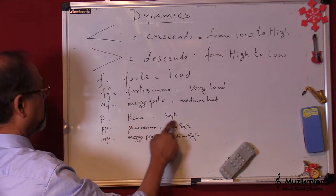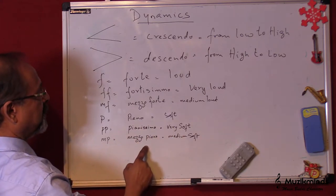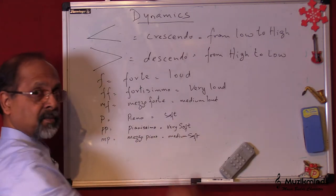P is piano, which is soft. PP is pianissimo, which is very soft. And MP is mezzo piano, which is medium soft.